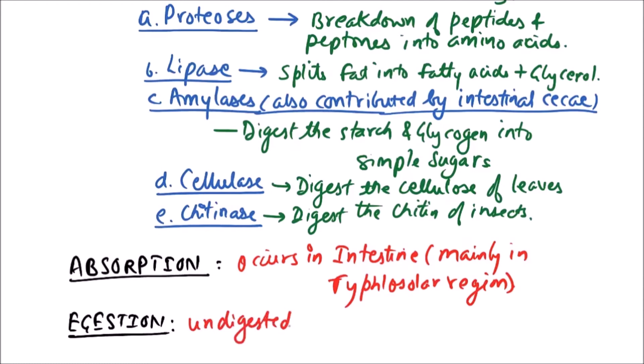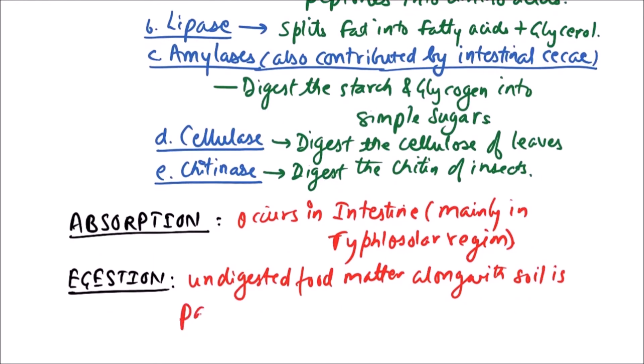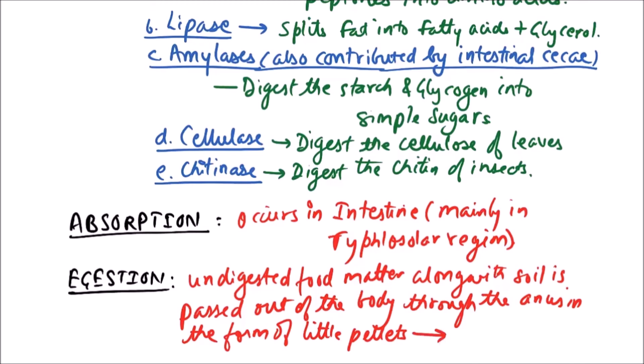The undigested food matter along with soil is passed out of the body through the anus in the form of little pellets known as worm castings.